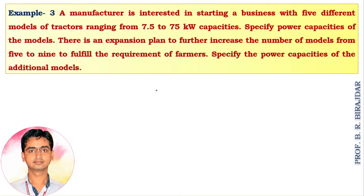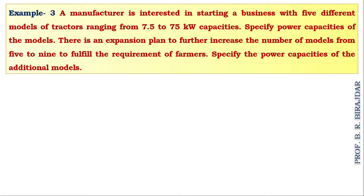Now we will see the next problem. This is the third problem. A manufacturer is interested in starting a business with five different models of tractor, ranging from 7.5 kilowatt to 75 kilowatt capacity. The lower limit is 7.5 and the upper limit is 75. We need to specify the power capacities of the models.